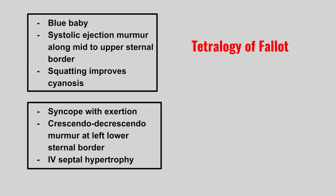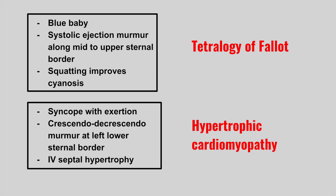The next one is syncope with exertion, a crescendo-decrescendo murmur at the left lower sternal border, and IV septal hypertrophy. This is hypertrophic cardiomyopathy.